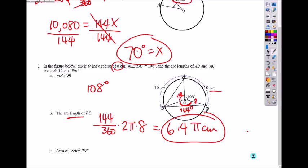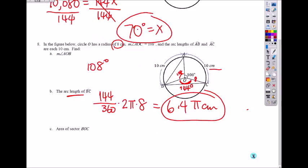What's the area of the sector AOC? So you do the same thing. It's 144 out of 360, but now it's the area. So you multiply by pi R squared. So just bring pi outside.